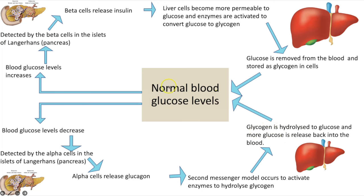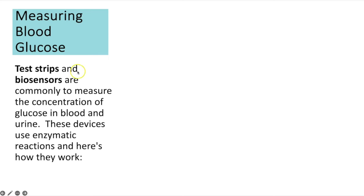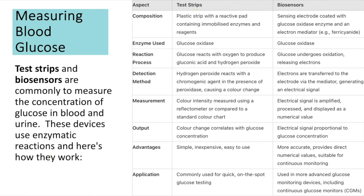Glucose can be measured to test for diabetes using test strips and biosensors, both of which use enzyme reactions. Test strips are commonly used for quick, on-the-spot glucose testing, whereas biosensors are used in more advanced glucose monitoring devices, including continuous glucose monitoring. A comparison table covers the enzymes used, reactions involved, how detection works, what's measured, output, advantages, and use cases for each. You can pause to read through that information or screenshot it for your notes.